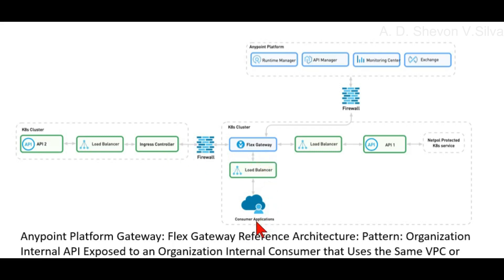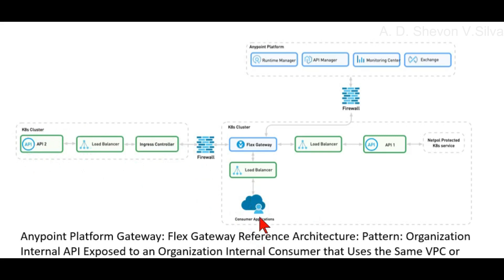Here you can see a consumer application's load balancer, Flex Gateway load balancer, and API. In the first K8 cluster, there is the API load balancer and ingress controller. In a different K8 cluster, the consumer application interacts with the load balancer, which interacts with Flex Gateway. Flex Gateway interacts with the load balancer, which interacts with API one — a network-protected K8 service.